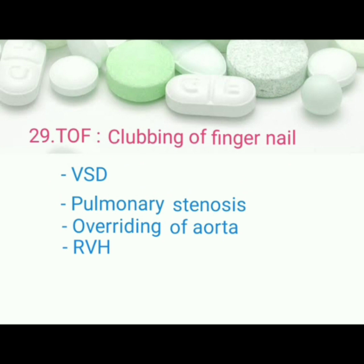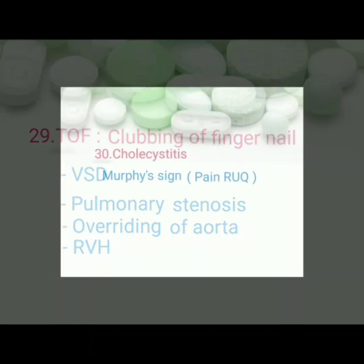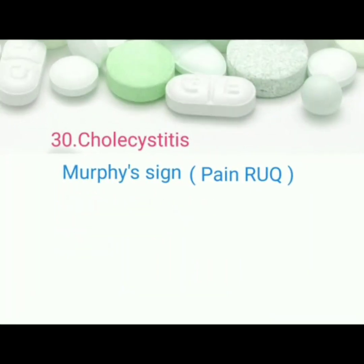TOF, Tetralogy of Fallot: pathognomonic sign is clubbing of fingernails, VSD, pulmonary stenosis, overriding of aorta, and right ventricular hypertrophy. Cholecystitis: pathognomonic sign is Murphy's sign, pain in right upper quadrant.